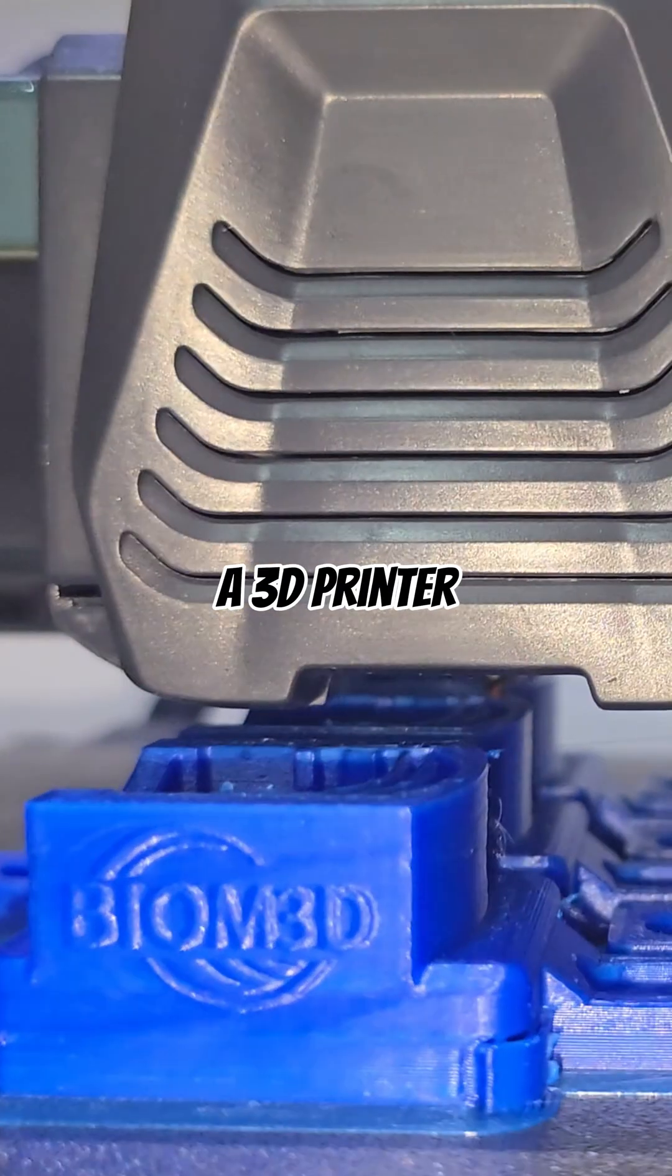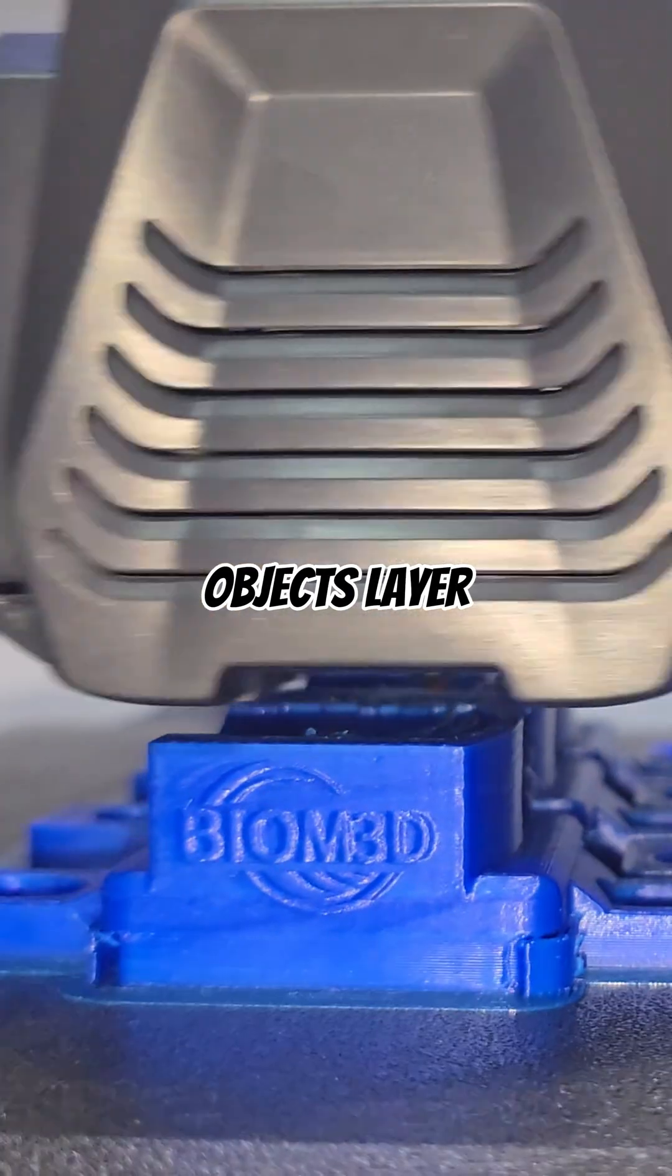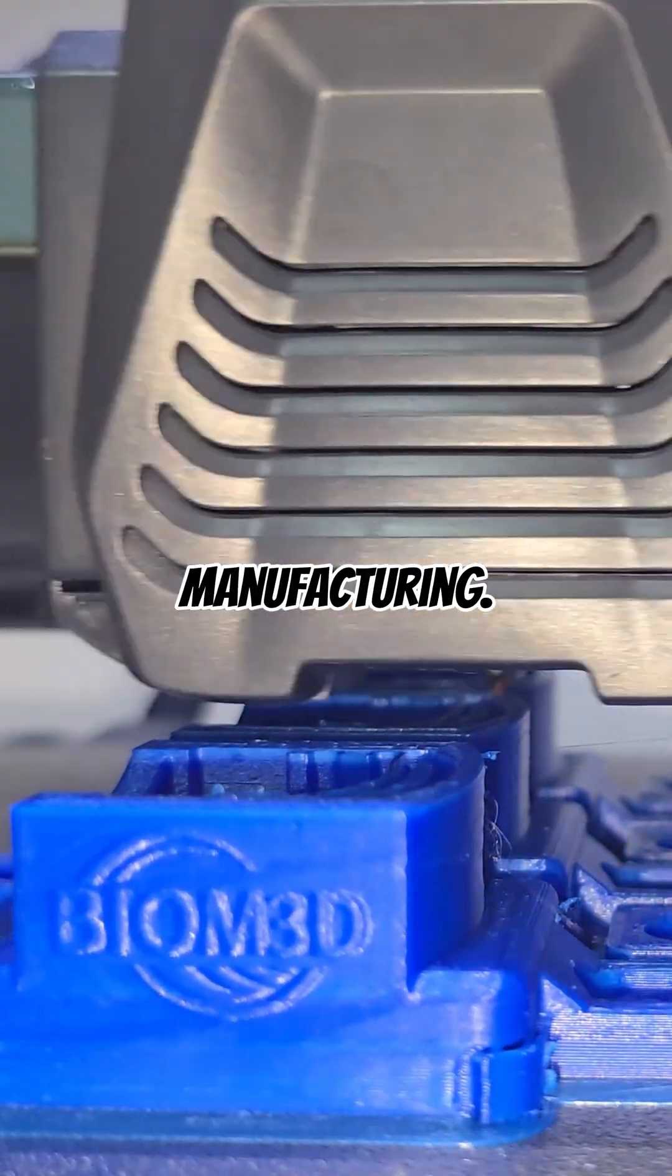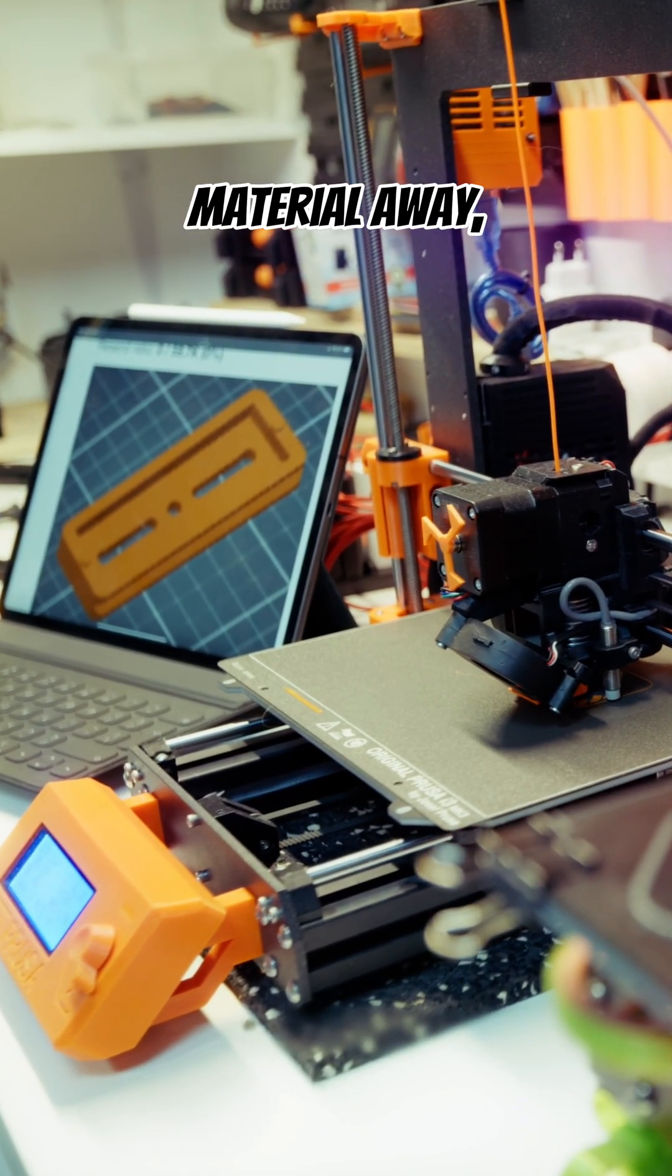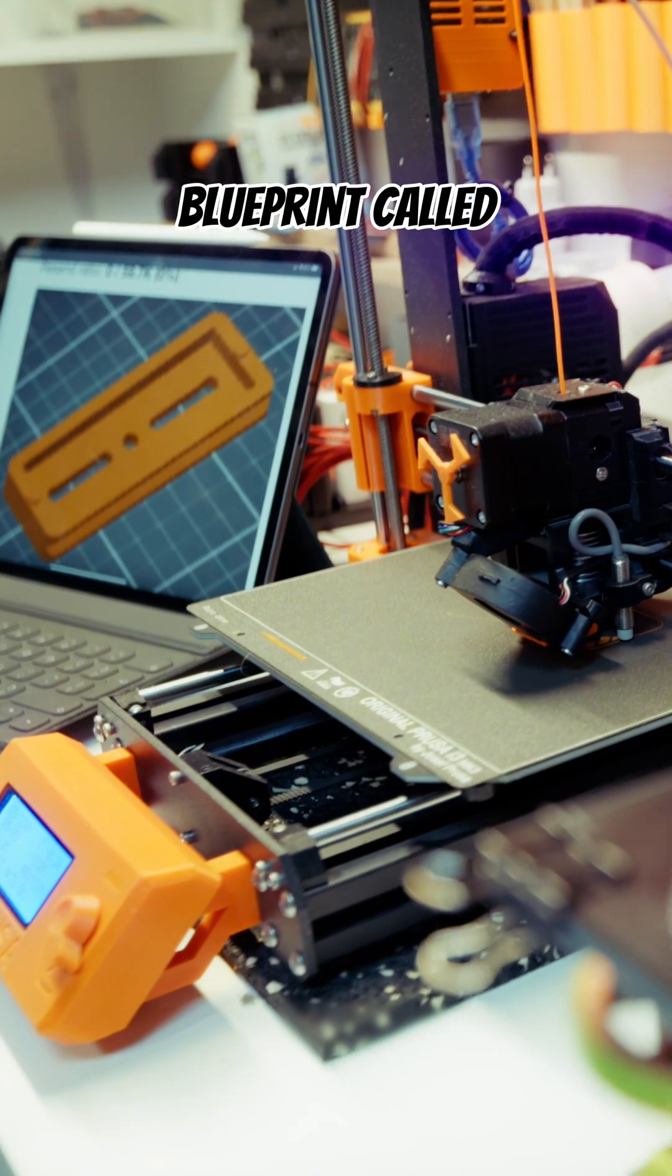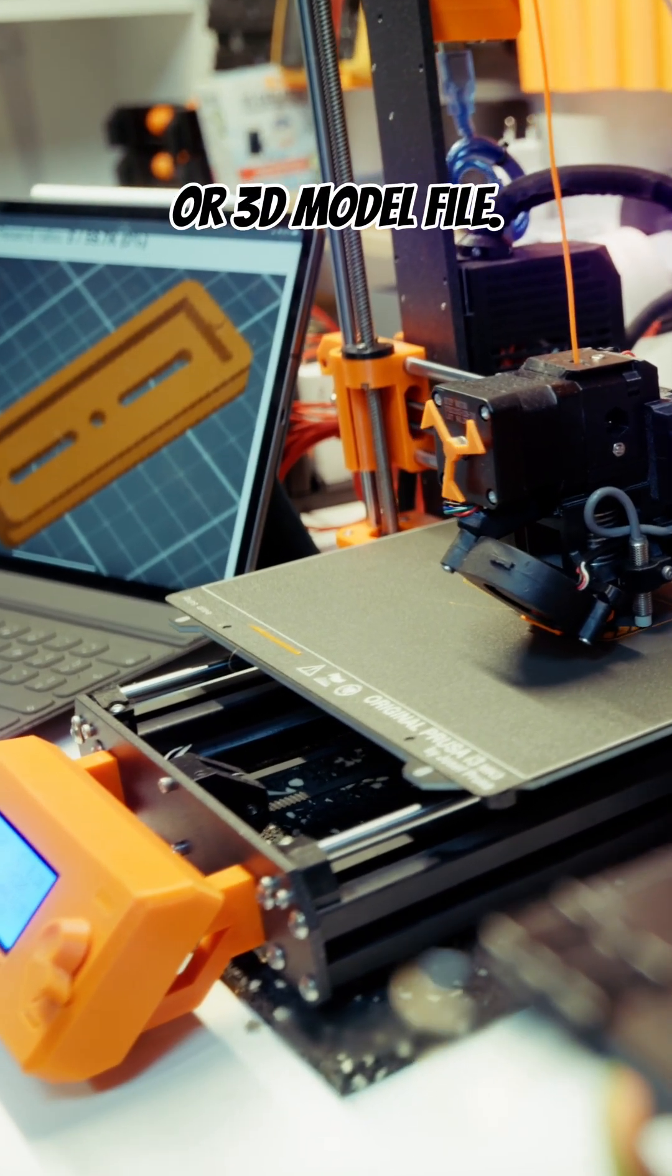A 3D printer works by creating objects layer by layer, a process known as additive manufacturing. Instead of cutting or carving material away, it builds upward from a digital blueprint called an STL or 3D model file.